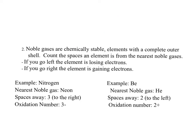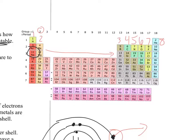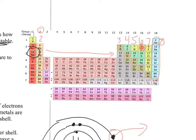An easier method to avoid that mistake is to count to the nearest noble gas. All elements want to be like the noble gases — they want a full outer shell. For example, if I put my finger on oxygen and count to neon, the nearest noble gas, I am one, two spaces away. So oxygen's oxidation number is negative two, meaning it needs to gain two electrons.